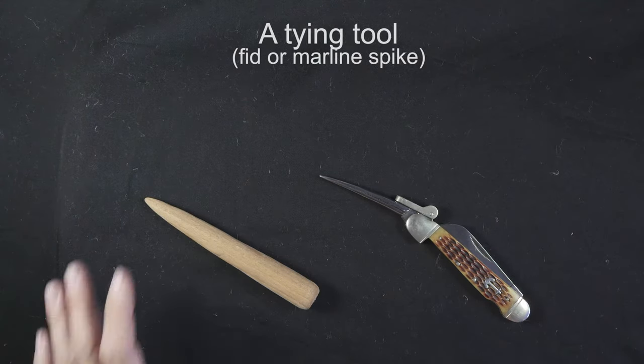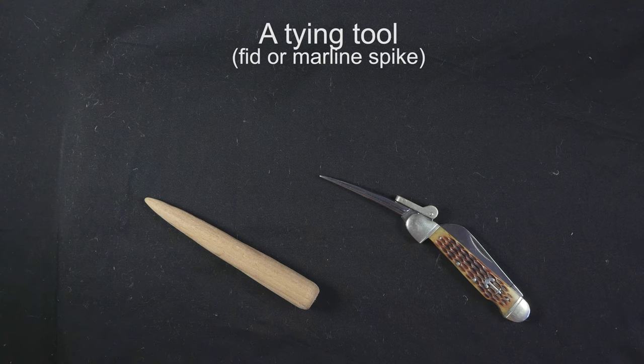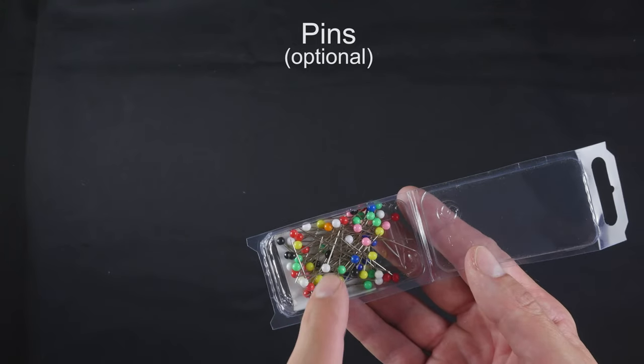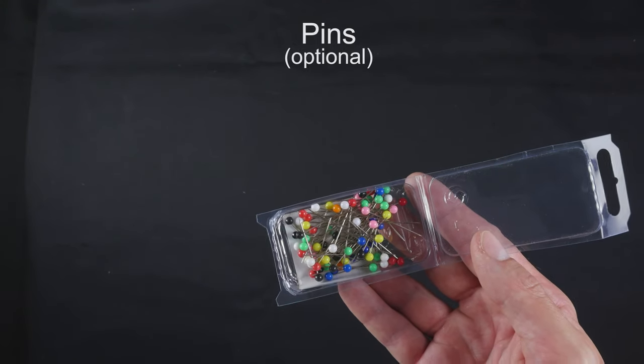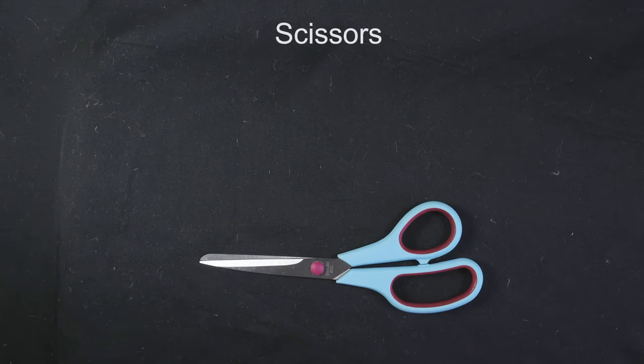A tying tool, such as a fid or a marlin spike, is going to come in handy for finishing the mat. A couple of pins can also be quite useful for holding the mat while you're tying it. Finally, scissors are used to cut our rope.